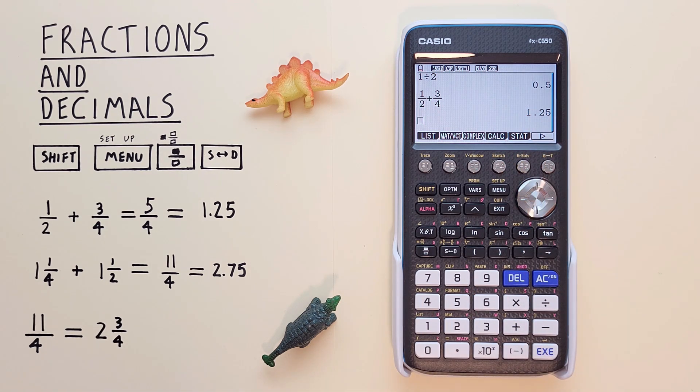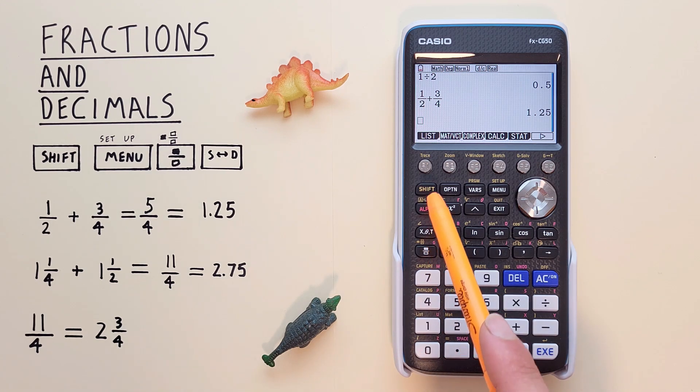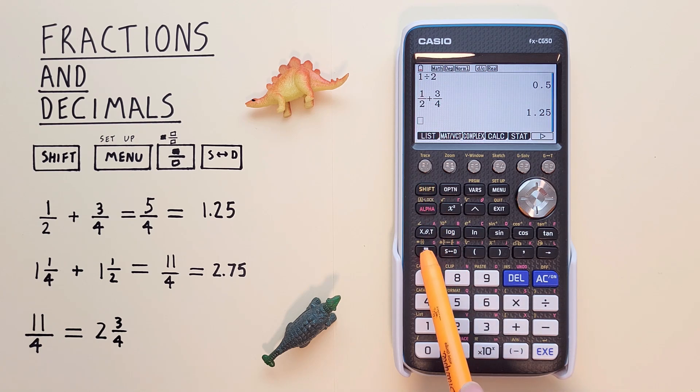What if we have mixed numbers? Like, for example, 1 and 1 quarter plus 1 and 1 half. We can enter that by using the SHIFT function of the fraction key, which is by pressing SHIFT and then the fraction key there.